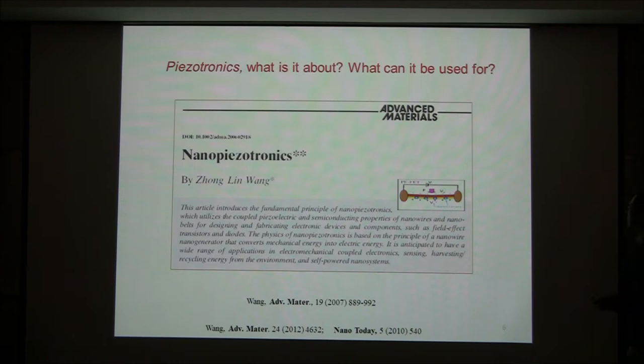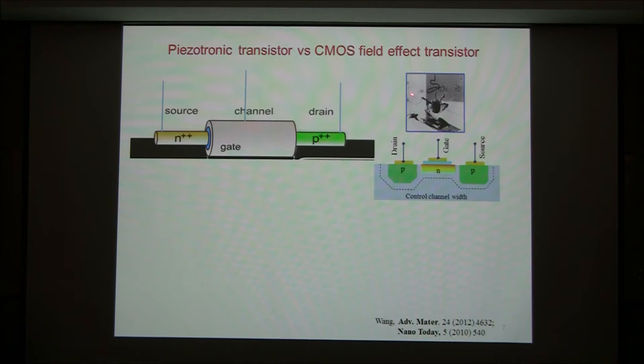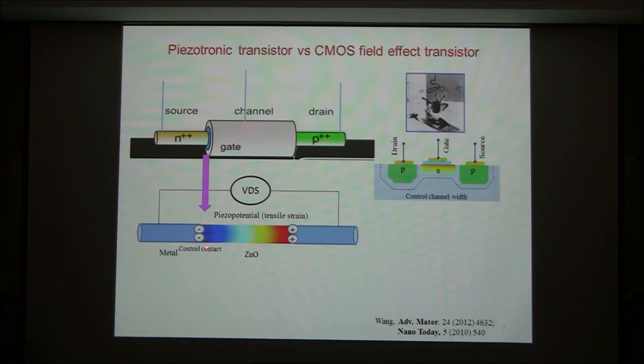This is a simple case — look at the solid-state transistor. We have a source, we have a drain, we have a channel. The gate controls the channel width so that the current from source to drain can be controlled. This is the fundamental. We control the channel width. Instead of controlling the channel width, we can control the interface at which the charge will flow.